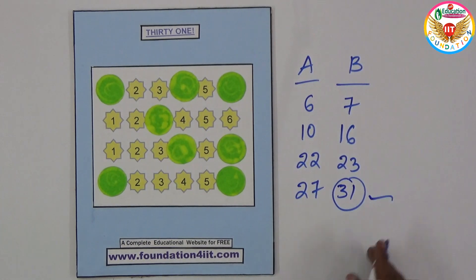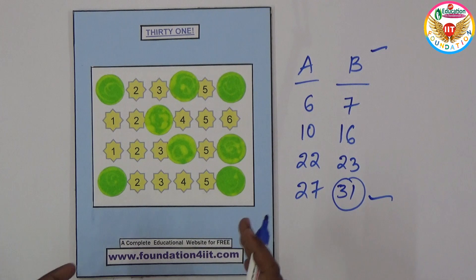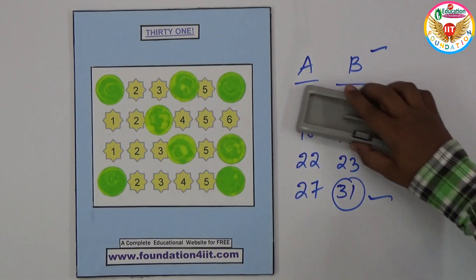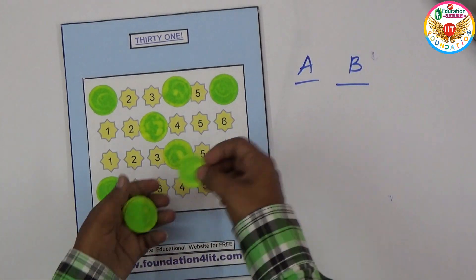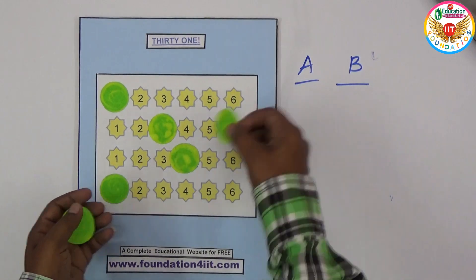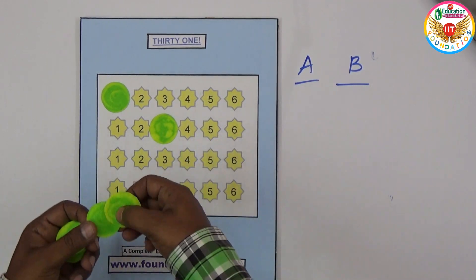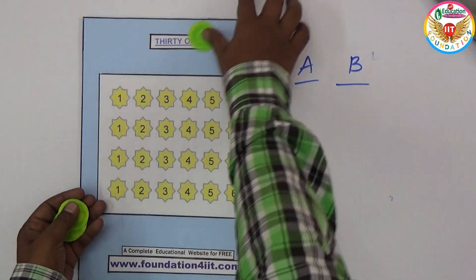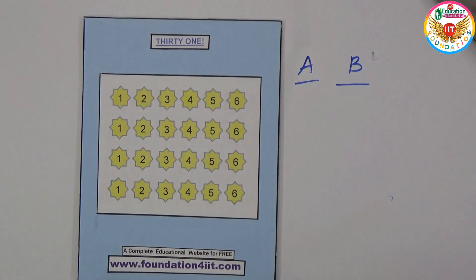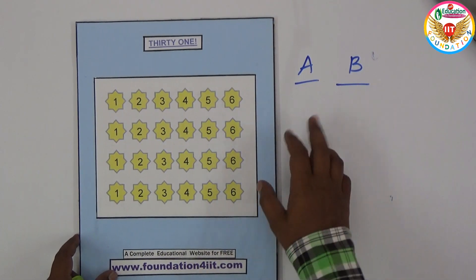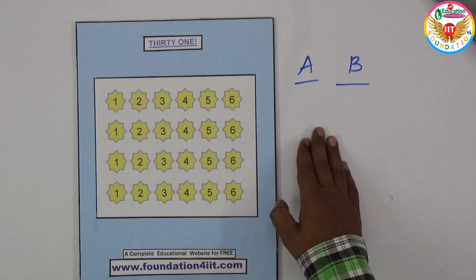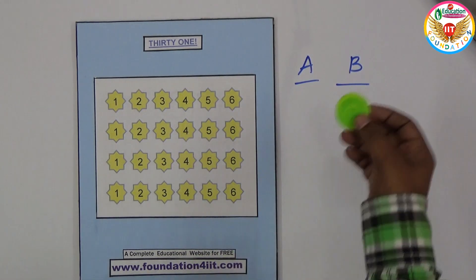Once you get 31, B is the winner. So two players can play this game. Let us see one more way. Take out these cards - whoever will get 31 first is the winner. It's not so easy to win because we should give the chance for opponent not to take exactly 31.